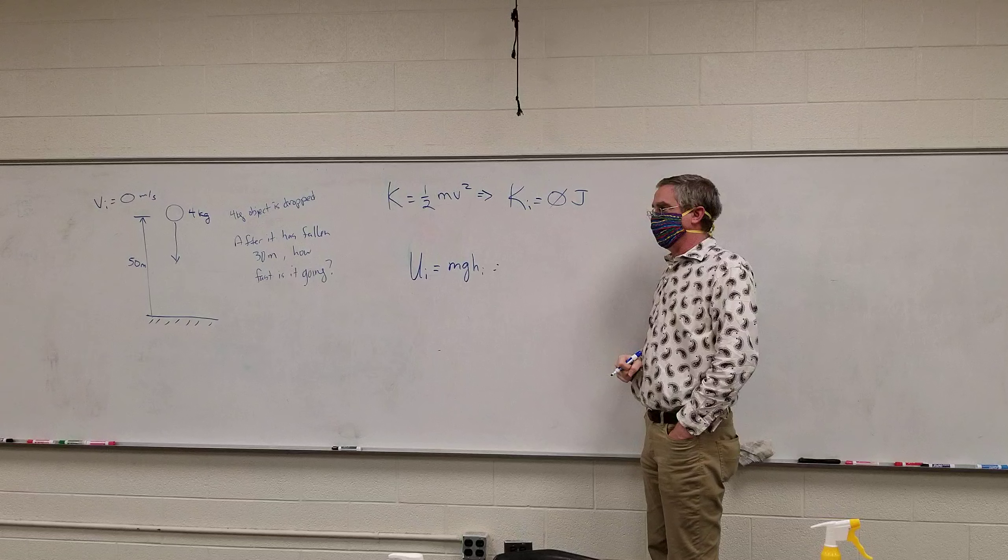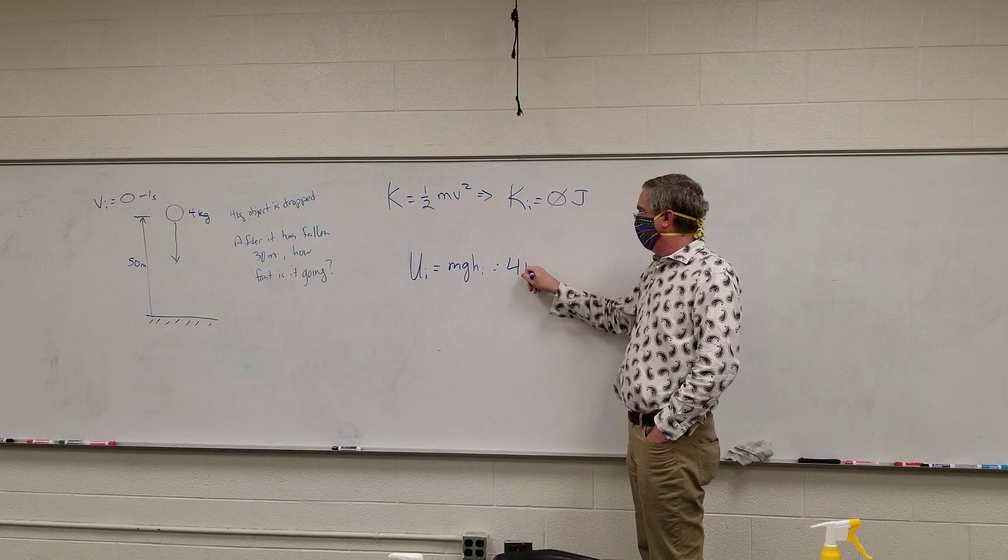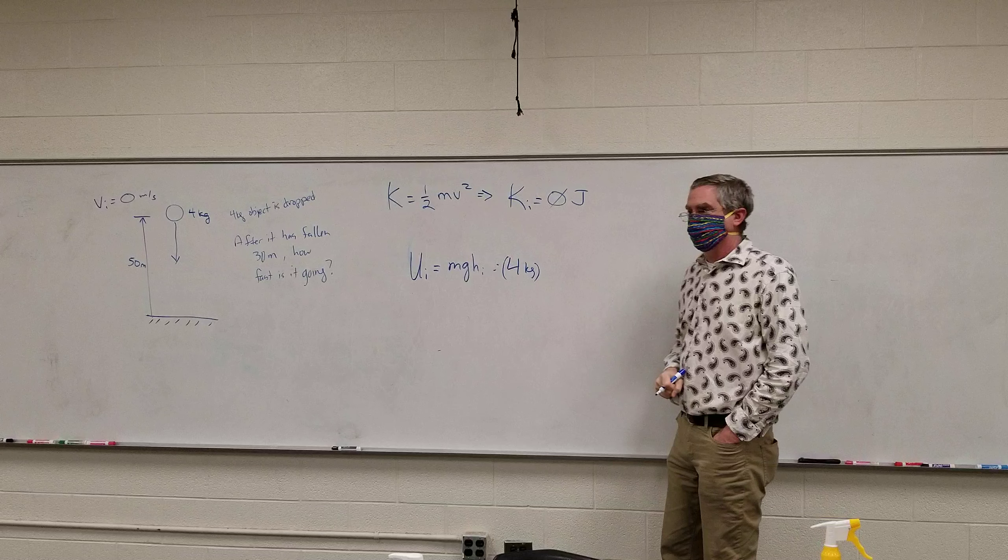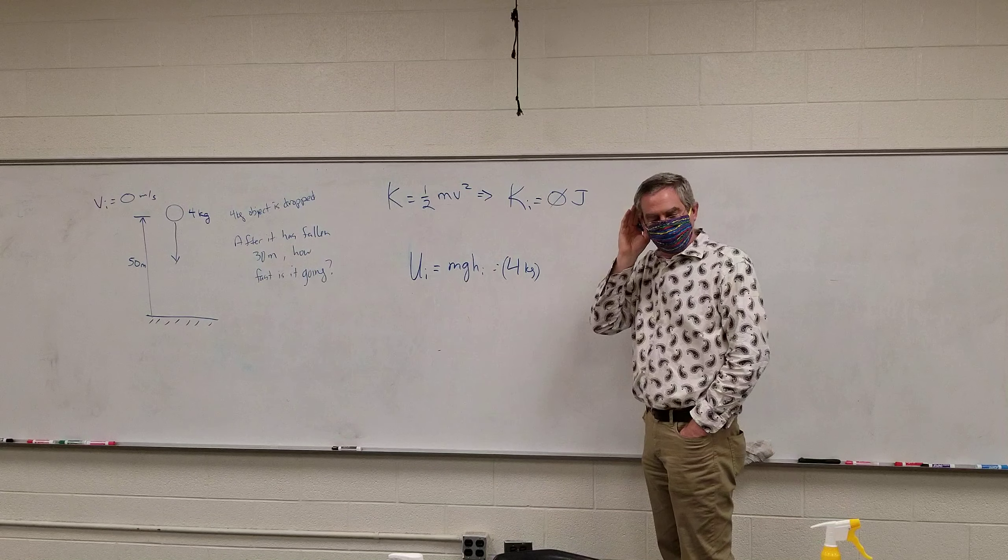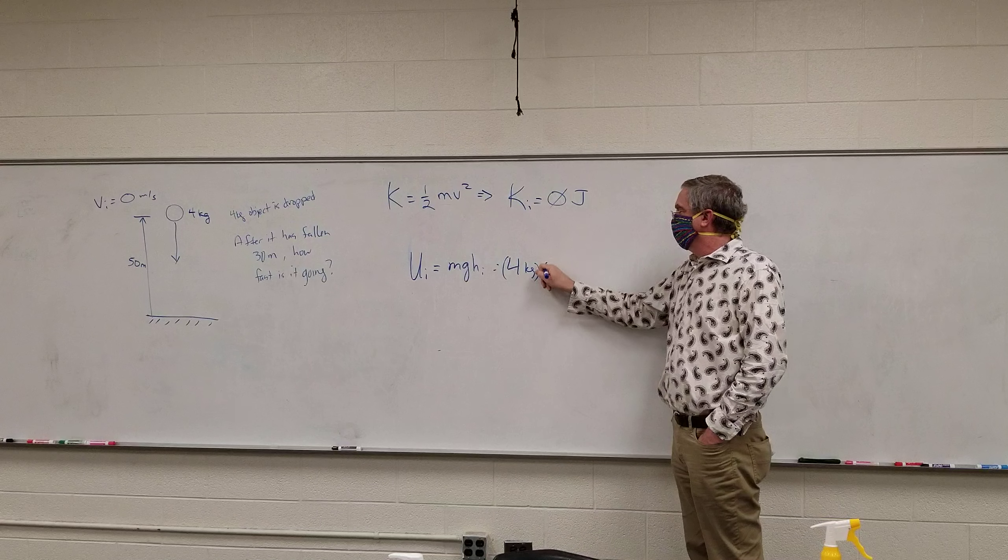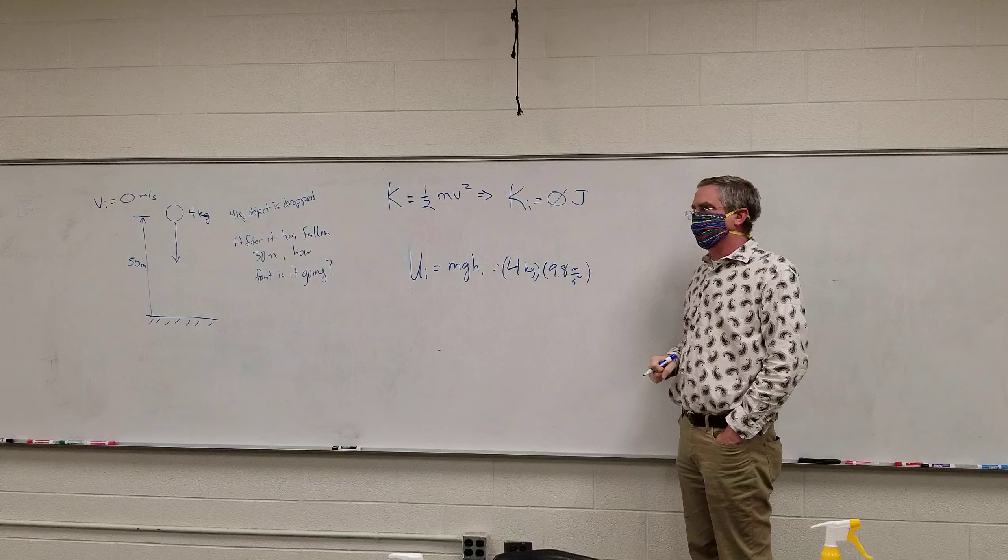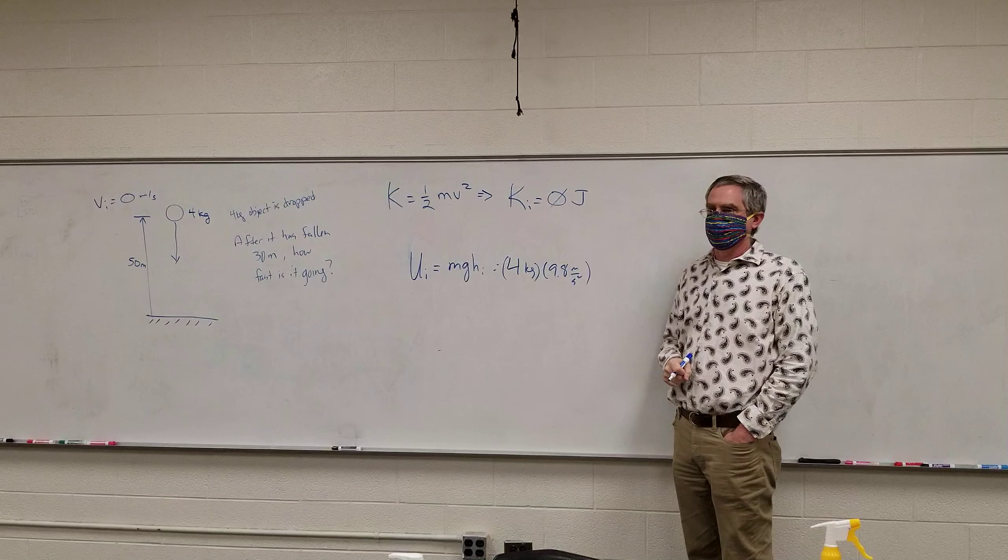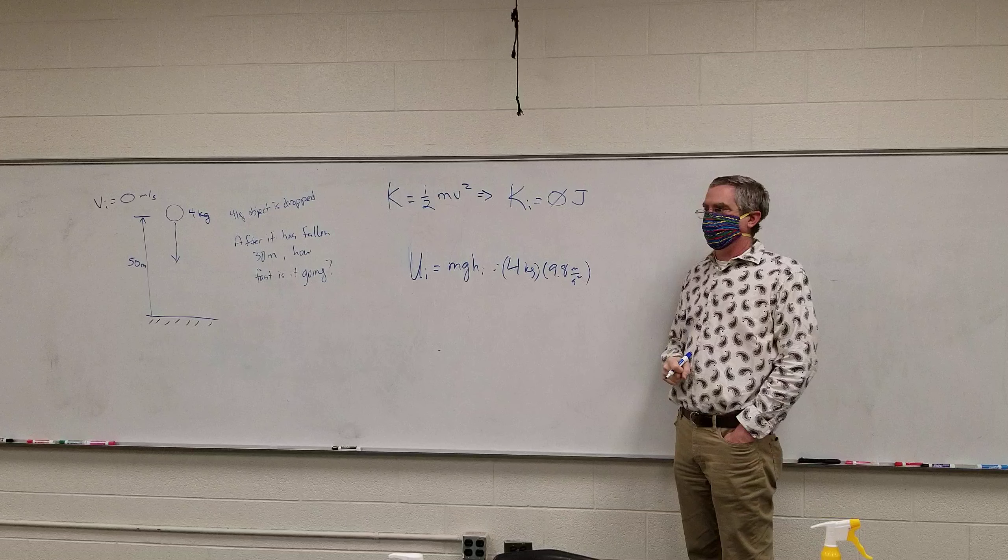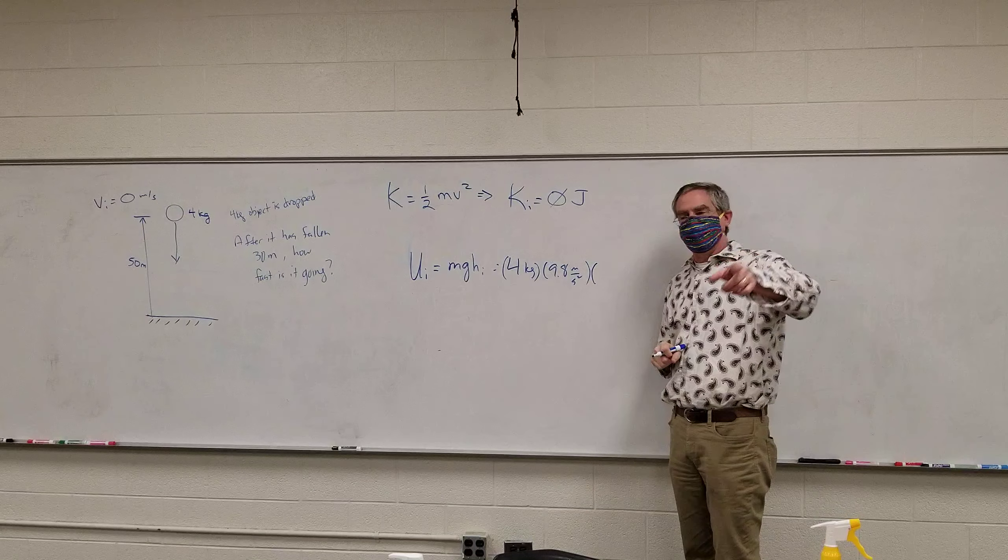So what is the mass? Four grams. What is G? Mass point A. Meters per second square. Meters per second square. And then initial height? The initial? Is it 50 meters? What did you say? 50 meters.